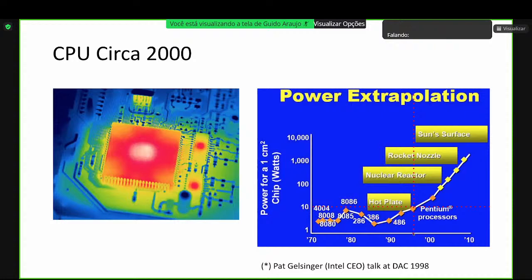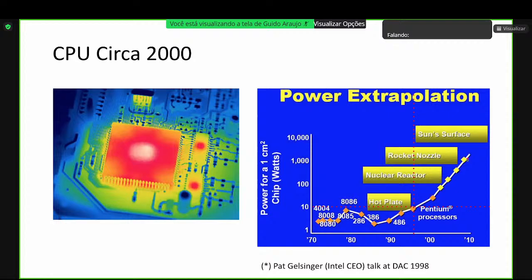Em 1998, Gelsinger mostrou que o problema não deveria mais ser apenas fazer programas executarem mais rápido, mas sim o consumo de energia. A projeção da Intel era que, se a tendência continuasse, em 2005 a densidade de potência de um processador seria equivalente à de um reator nuclear, e em 2010 atingiria a densidade da superfície do Sol. Obviamente, o processador teria derretido muito antes disso. Alguma coisa precisava ser feita a partir daquele momento.